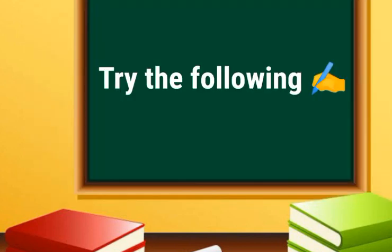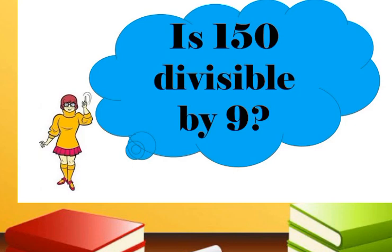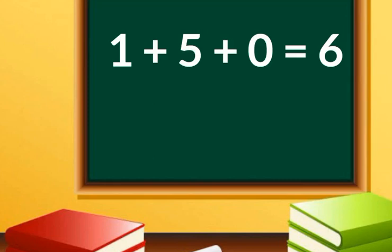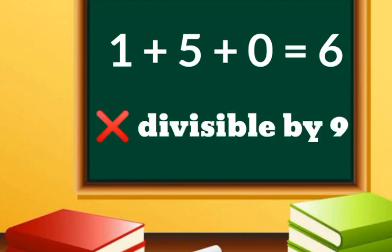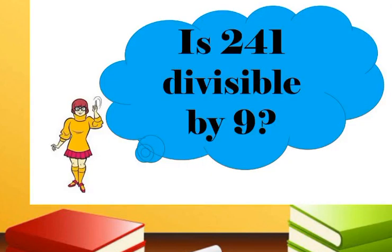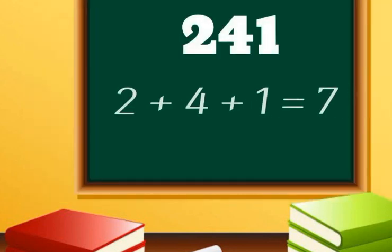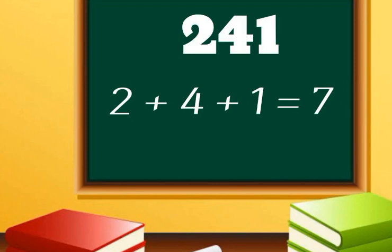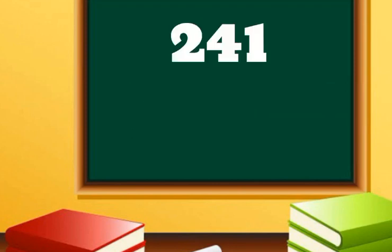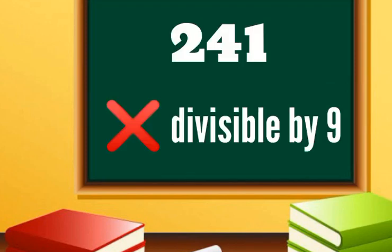Now let's try the following. Is 150 divisible by 9? Let's add up the digits: 1 plus 5 plus 0 equals 6. 6 is not divisible by 9, so the number 150 is not divisible by 9. What about this example — is 241 divisible by 9? Let's add up the digits: 2 plus 4 plus 1 equals 7. And 7 is not divisible by 9, so the number 241 is not divisible by 9.